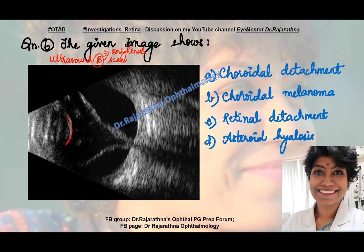All that I can see is the posterior surface of the lens. And this shadow that you see here is that of the optic nerve. Something is arising from the optic nerve, taut and going into the vitreous. So this is probably a retinal detachment.